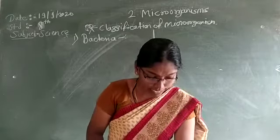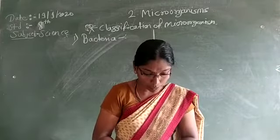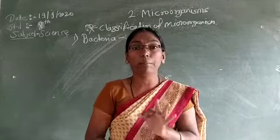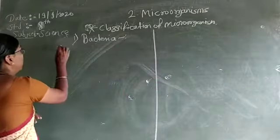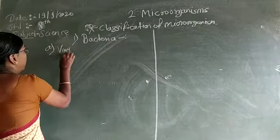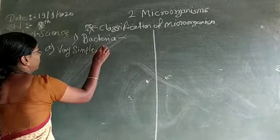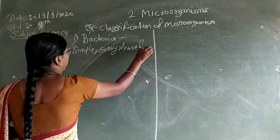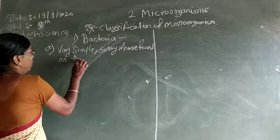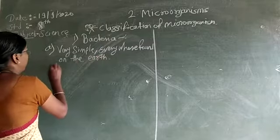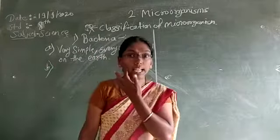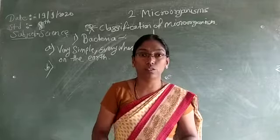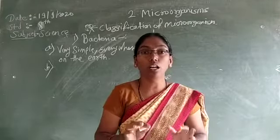First point: bacteria are the simplest, most diverse, widespread organisms on the earth. They are very simple and can be found everywhere on the earth.